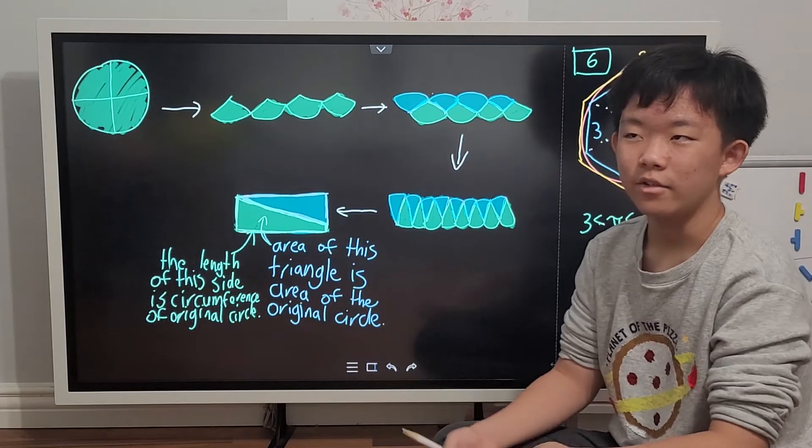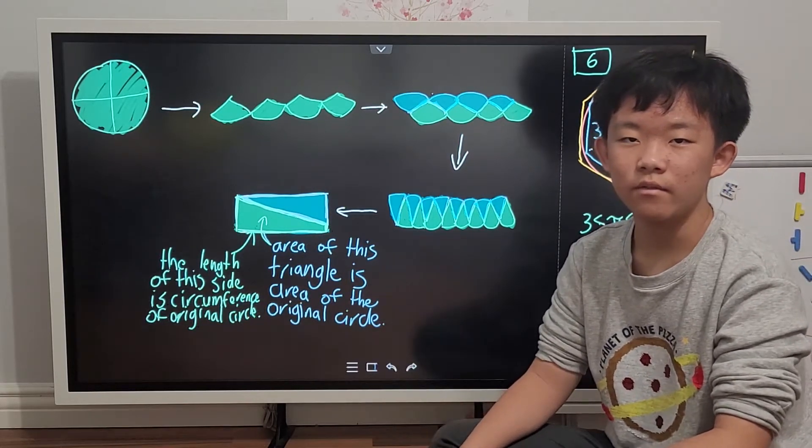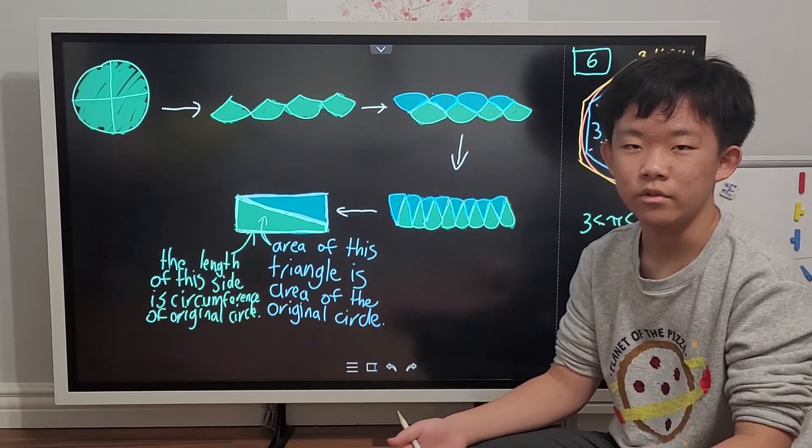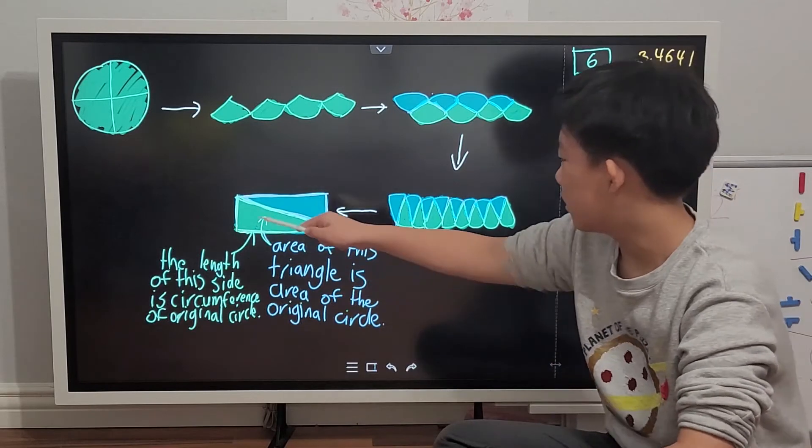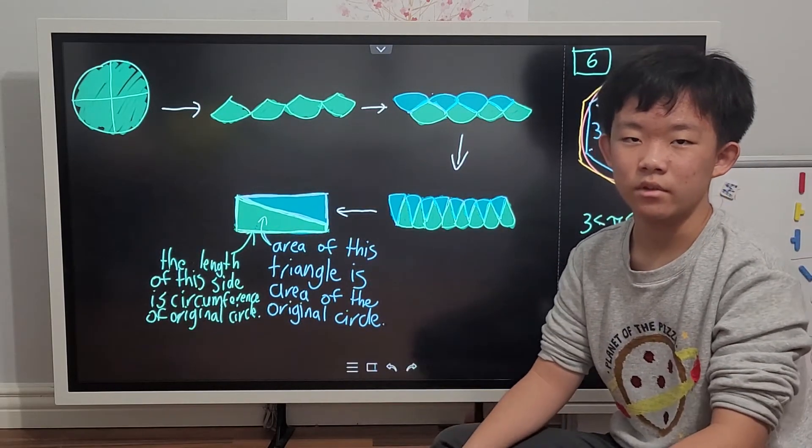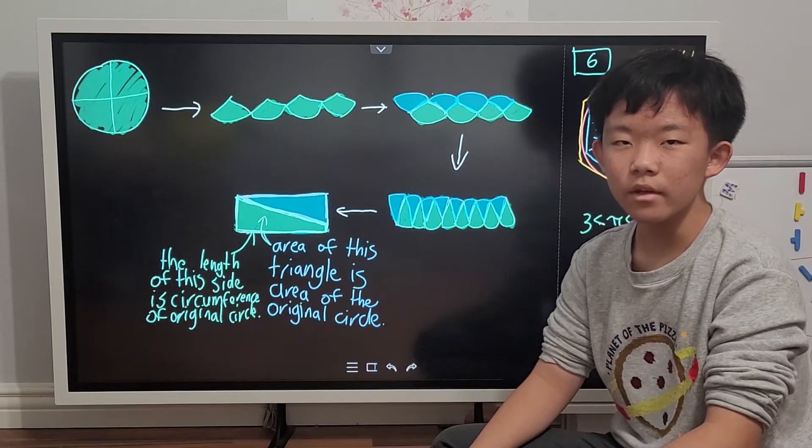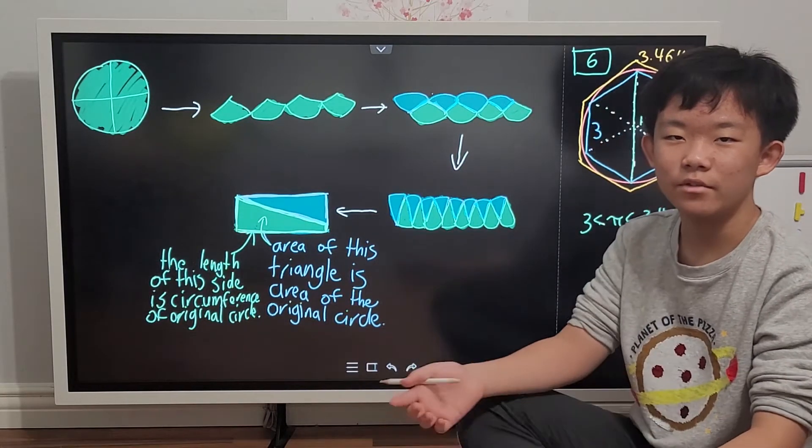And then, when you slice it into 2 and get a right triangle, the area of that triangle is equal to the area of your original circle. Also, this longer side here is also equal to the circumference of the circle. Except there's one problem. You can't measure it out.